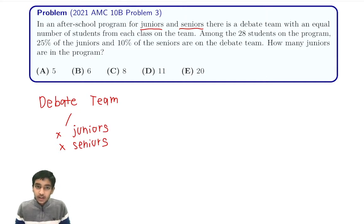If there's X juniors in the debate team and X is 25% of the total number of juniors in the after-school program, how many total juniors are there in the after-school program? Well, that's 4X, of course.